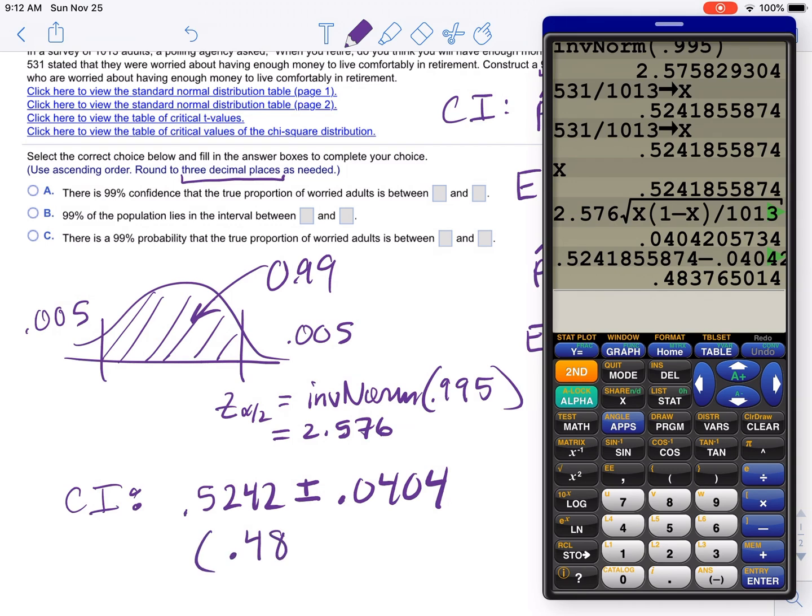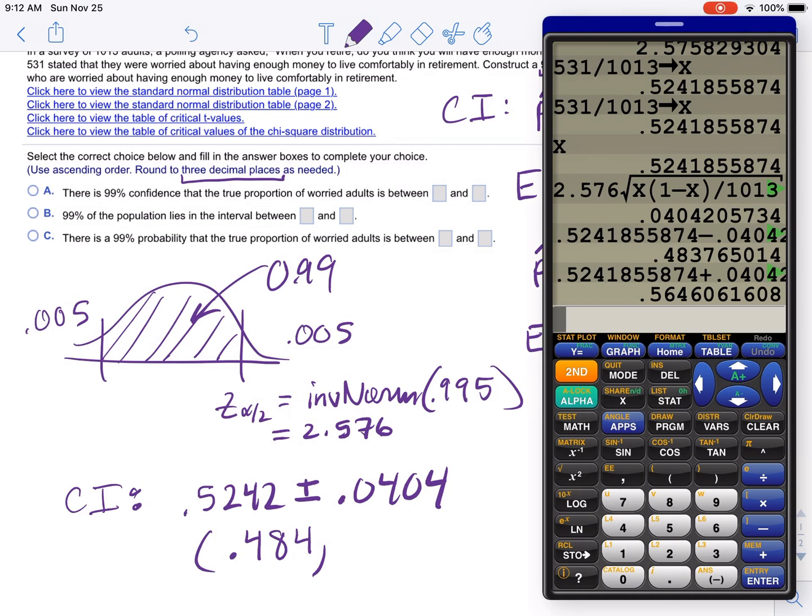So 0.484 comma. Now I'm going to do it again. But actually, I can just click that and then change the subtraction to addition. 0.565. And there's your confidence interval. So the answer will be part A.